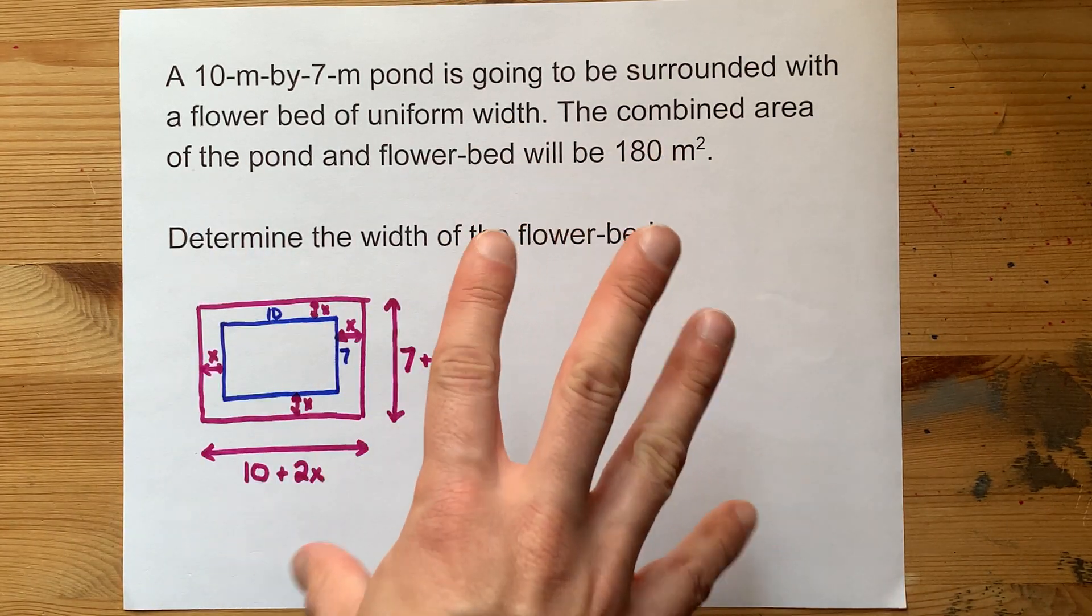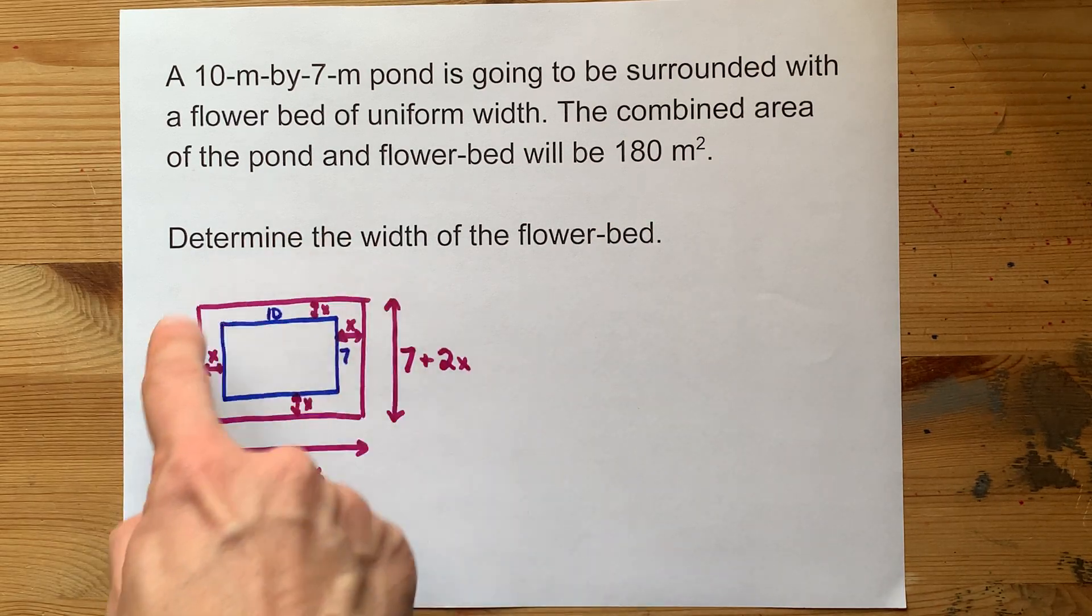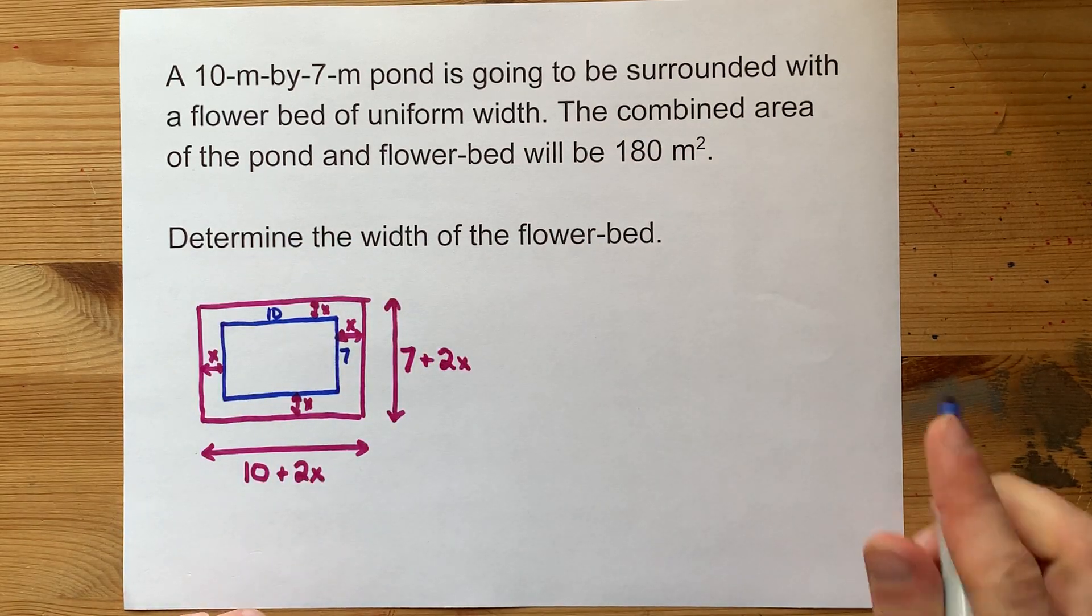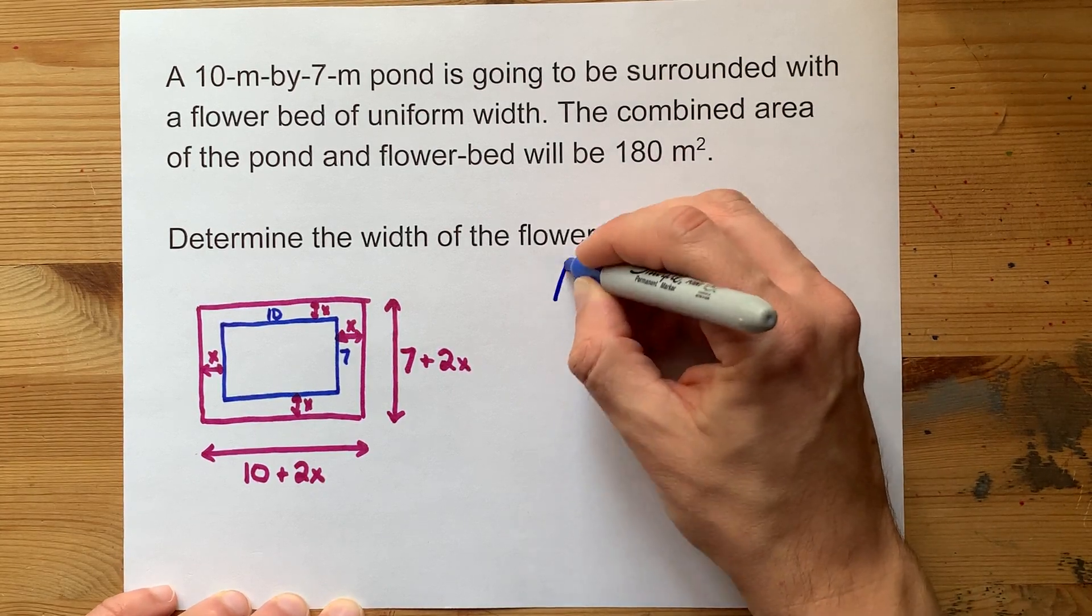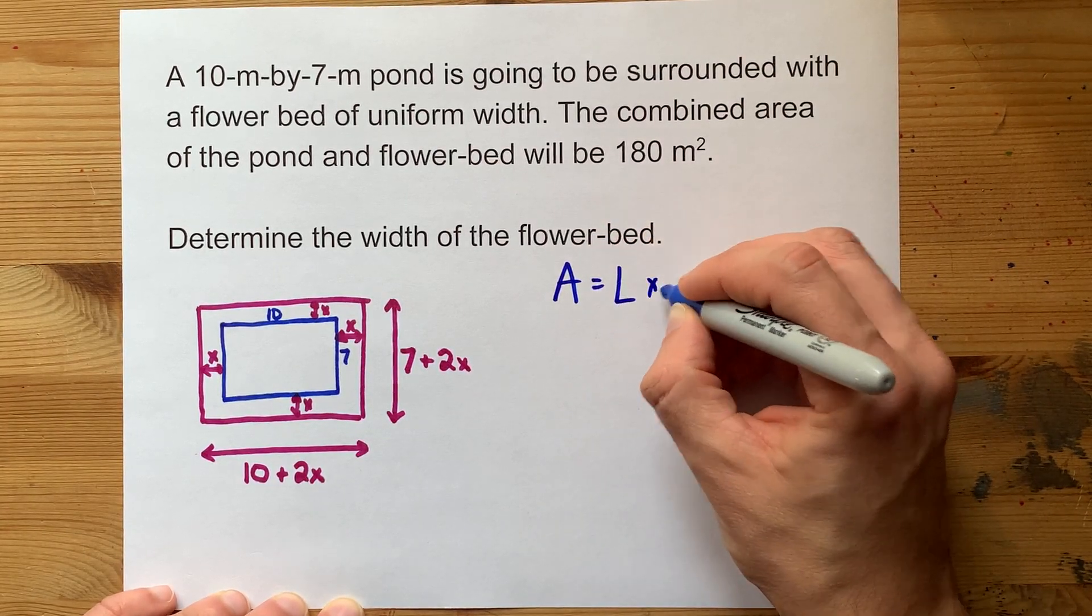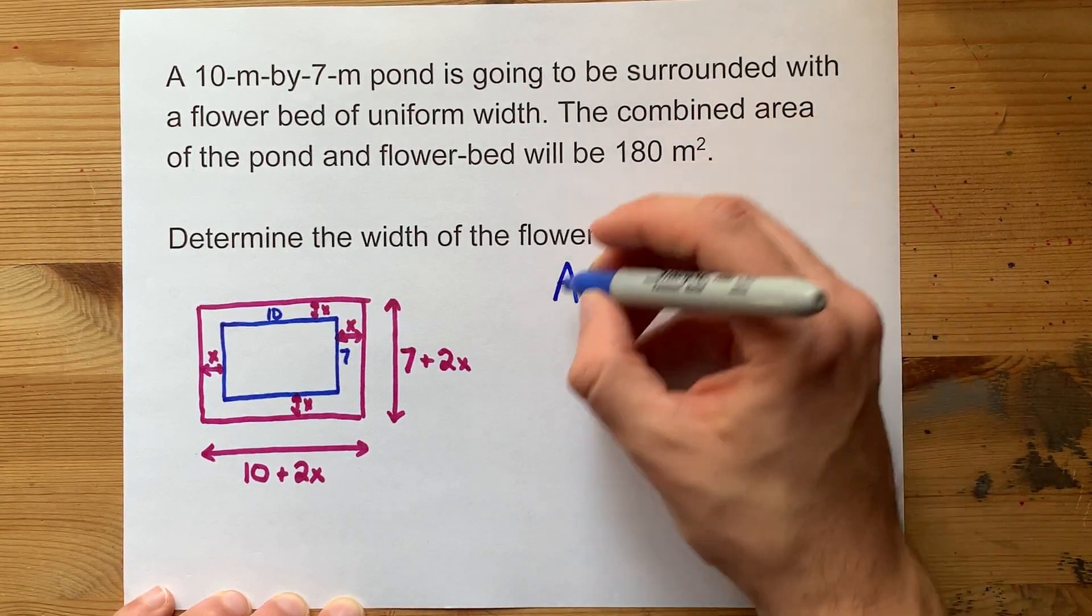Now what you're being told is that the new area combined of all of that, the area of the whole thing, is 180 meters squared. Because area is always length times width, and we're given the area as 180.